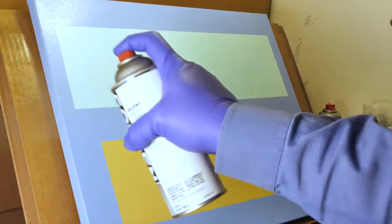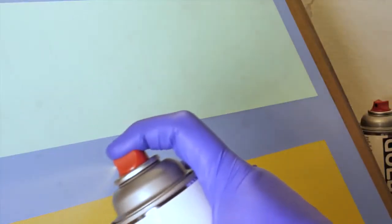An isolation coat makes application and removal of varnish easier by reducing the differences in surface absorbency and texture in acrylic colors, mediums, and grounds.